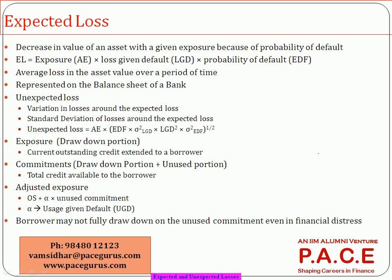When talking about expected loss, the focus is on the decrease in the value of the asset because of one person or a few people defaulting on a loan. The bank has to compute the chance of default, and in case a company or individual defaults, what is the loss given default. Because of the recovery rate — probably 70 to 80 percent can be recovered from the assets — only 20 percent goes as a loss for the bank.